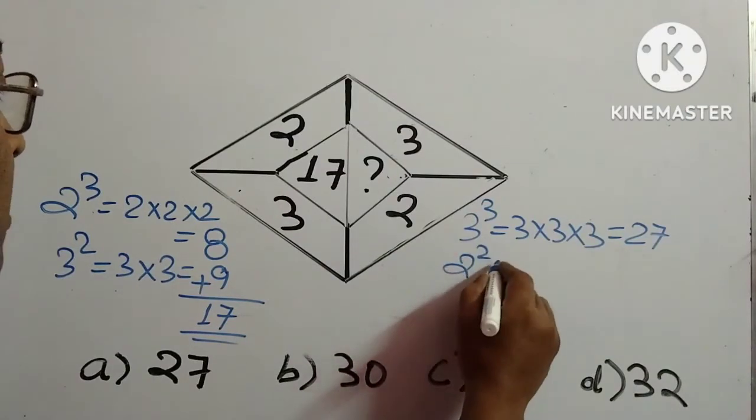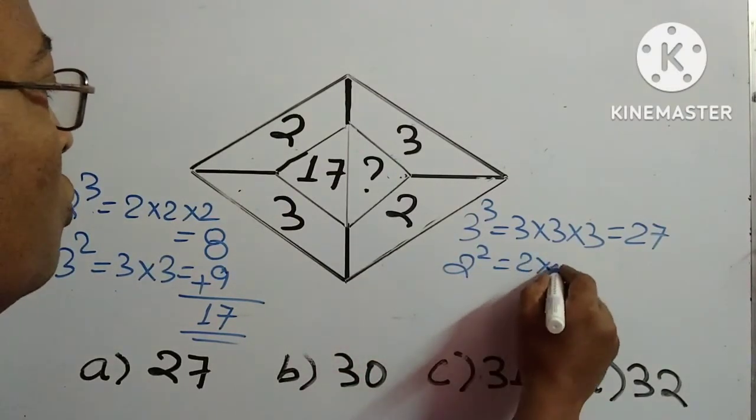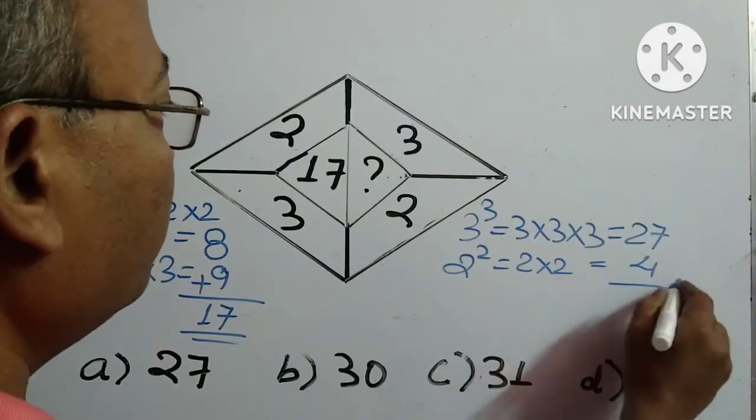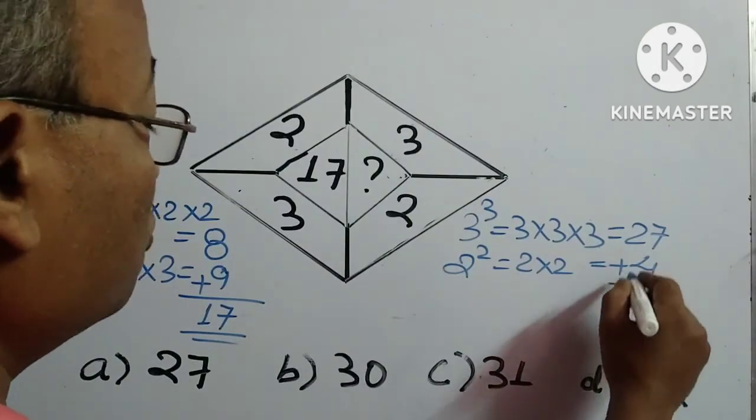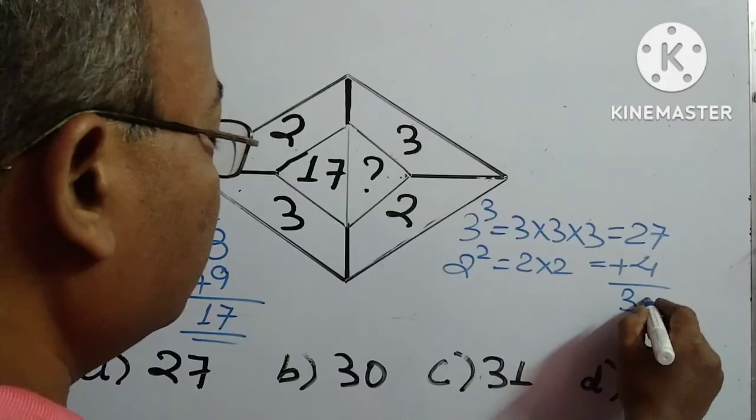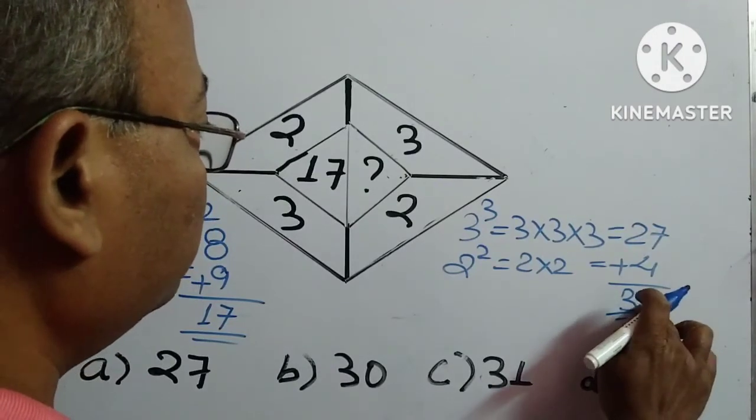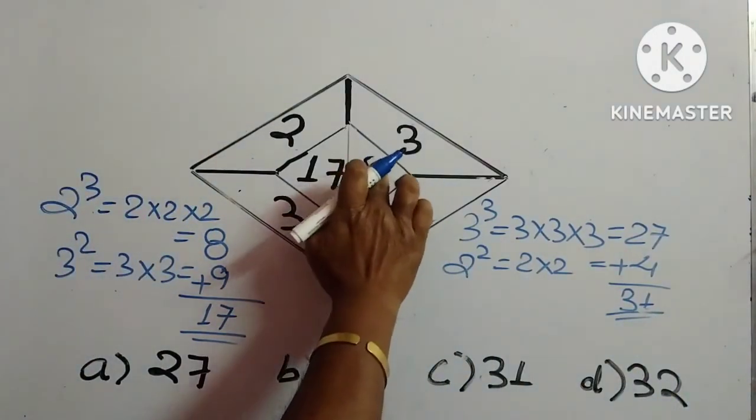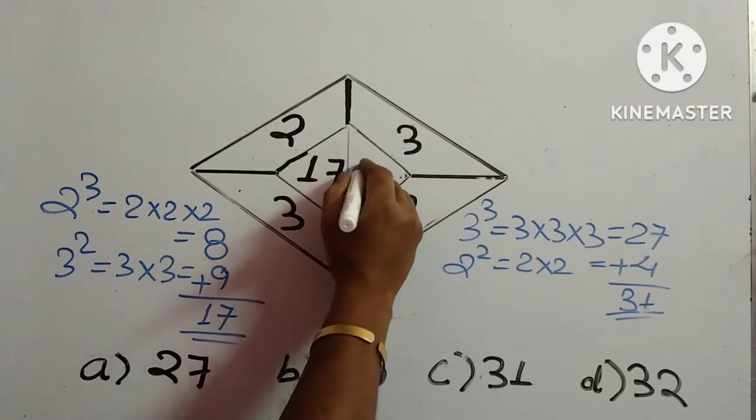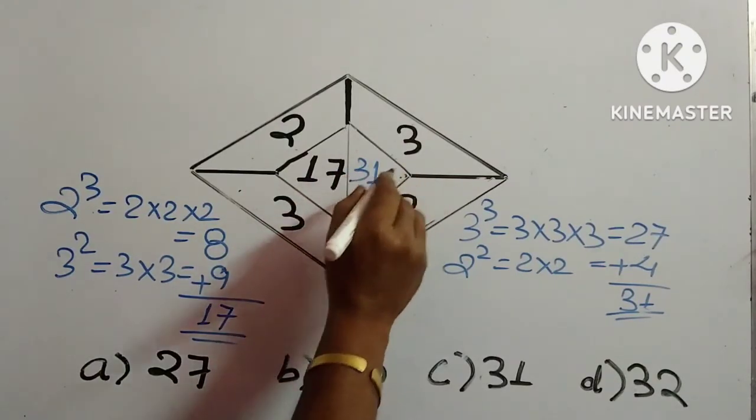square it, so 2 into 2 is 4. Now what we have to do, we have to add this one, so 27 plus 4 is 31. So here we have to write down 31 which is the answer.